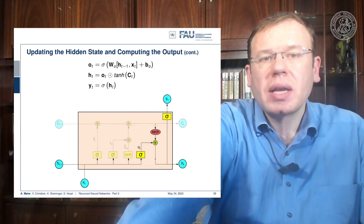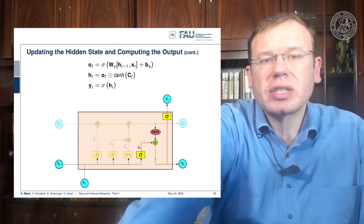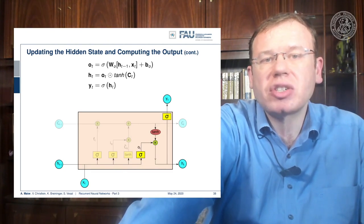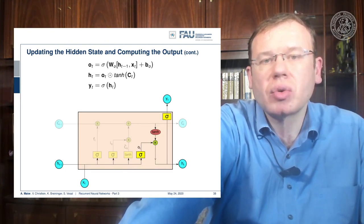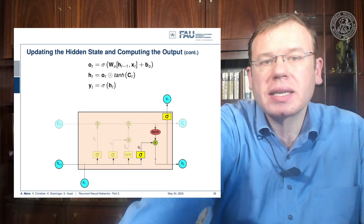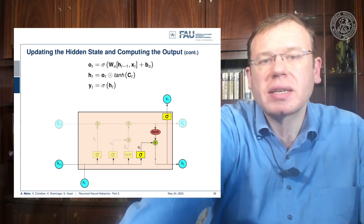So you see these are the update equations. We produce some OT, which is essentially a proposal for the new hidden state by a sigmoid function, and then we multiply it with the tangent hyperbolicus that is generated from the cell state in order to select which elements are actually produced.